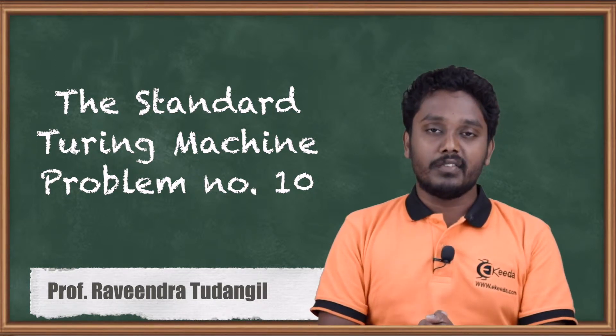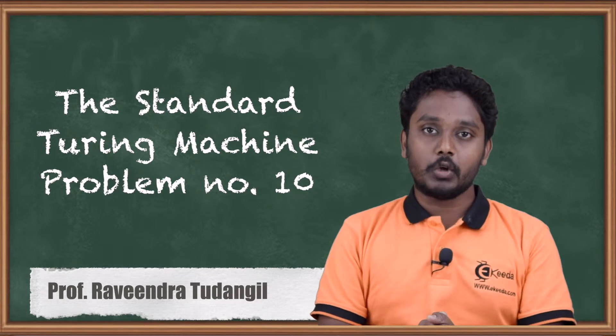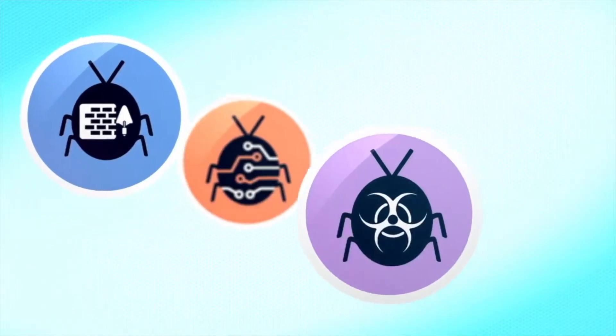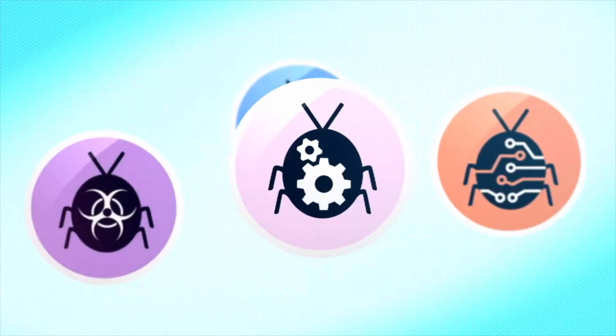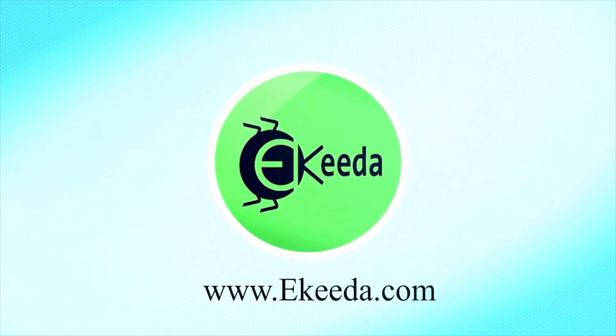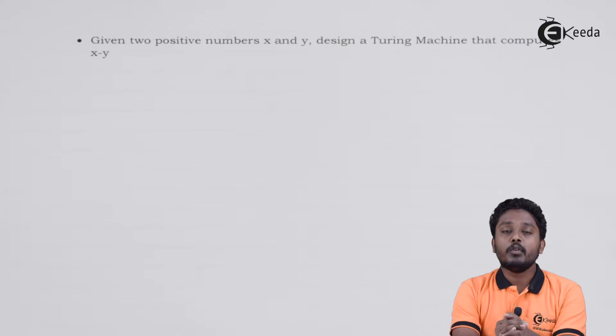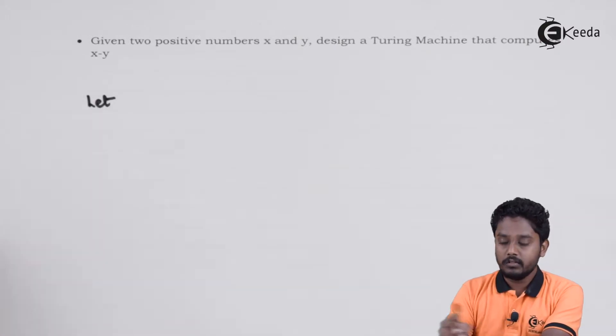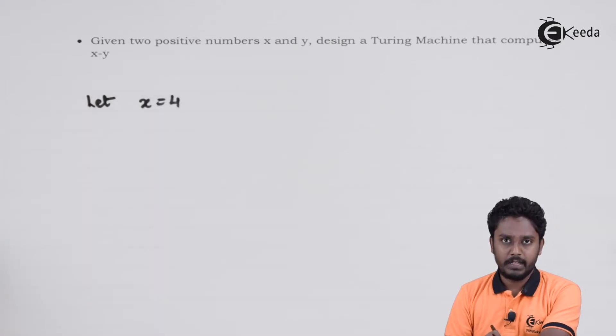Again, we are considering that the numbers are given in unary format. One more consideration is that number x is always greater than y, so we have always a positive result. Let's take x is equal to 4, y is equal to 3.